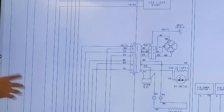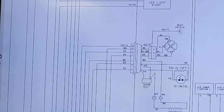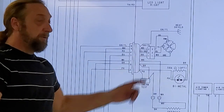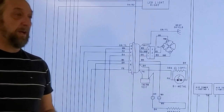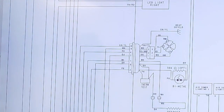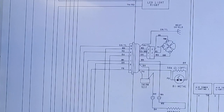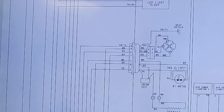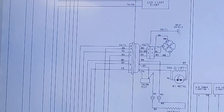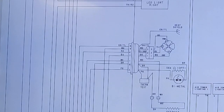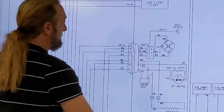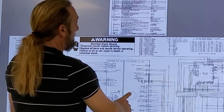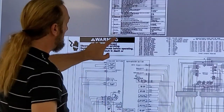So if I was to troubleshoot this fan motor — we know we have ground, we have three pins: one, two, and three. Which ones would I put my meter on to check if I'm getting voltage to that fan motor to make it run? With a simple multimeter you could only check VCC. And then for pulse width modulation, you'd move to our frequency setting.